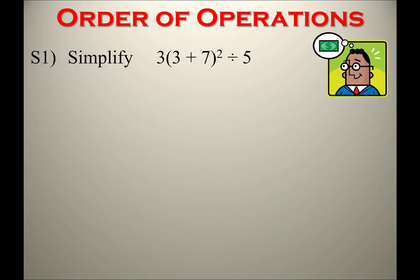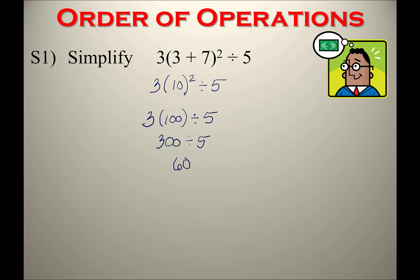Pause the video and try this problem yourself, then resume to see the explanation. The answer is 60. In this problem, first handle the grouping symbols: 7 plus 3 equals 10. Next, simplify the exponent: 10 squared is 100. Then multiply: 3 times 100 is 300. Finally, divide: 300 divided by 5 is 60.